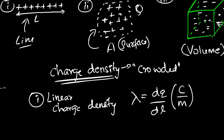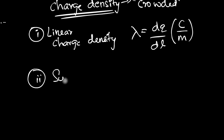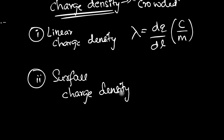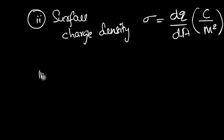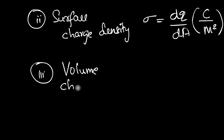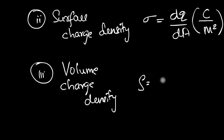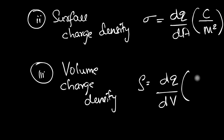The second is surface charge density, symbol sigma. Sigma equals dq divided by dA, where dA is a tiny area over which there's a charge dq. This has units of coulombs per meter squared. The third is volume charge density, symbol rho. Rho equals dq divided by dV, where dV is a tiny volume element, giving units of coulombs per meter cubed.